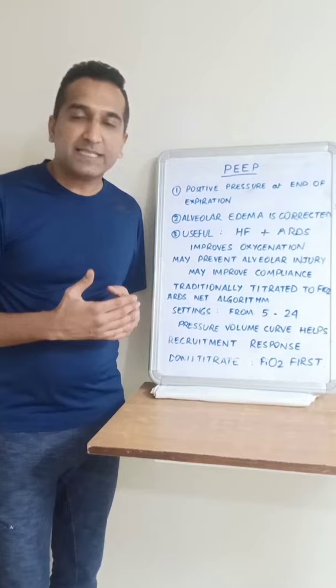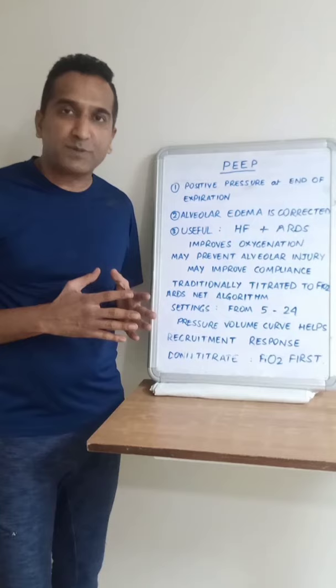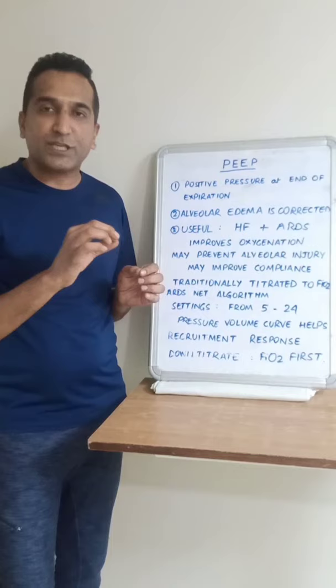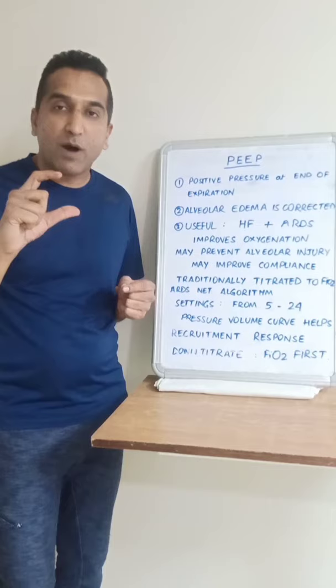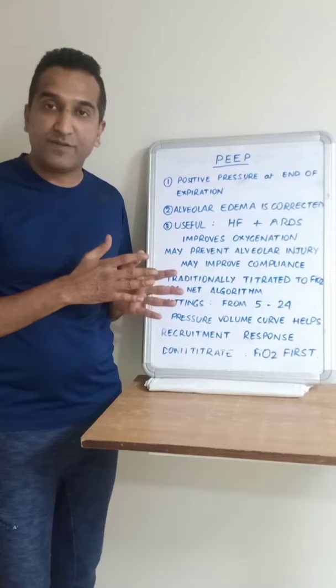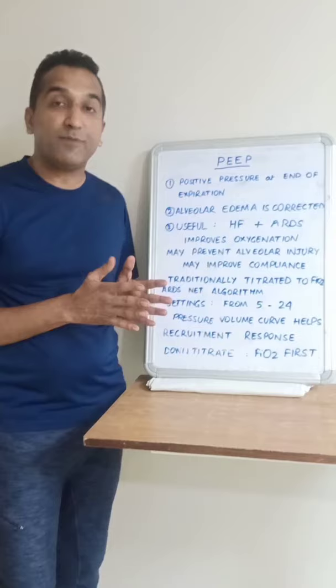PEEP may also improve compliance, because the distension of these collapsed alveoli puts them at a mechanical advantage. This can be seen by looking at the pressure-volume curve, where initial pressures produce very little change in volume, and then there is a point at which a small change in pressure produces a large change in volume — we call it the lower inflection point. This lower inflection point can help us in setting up the optimal PEEP.